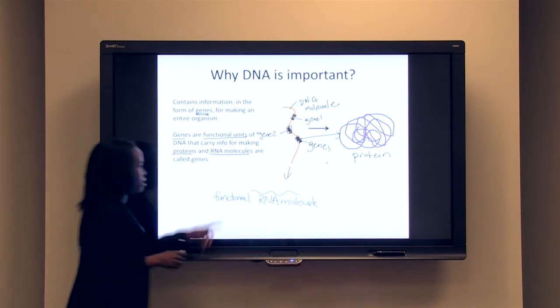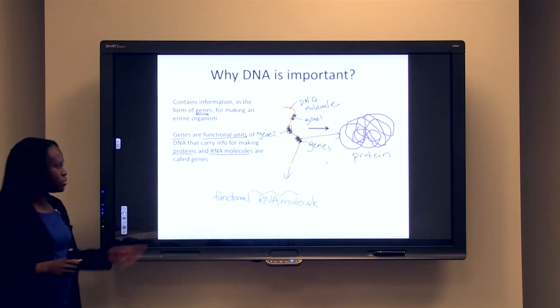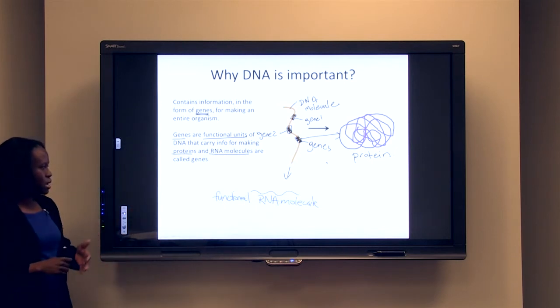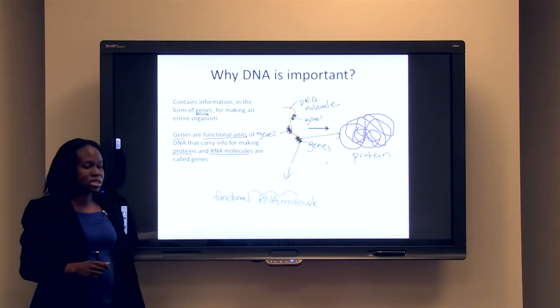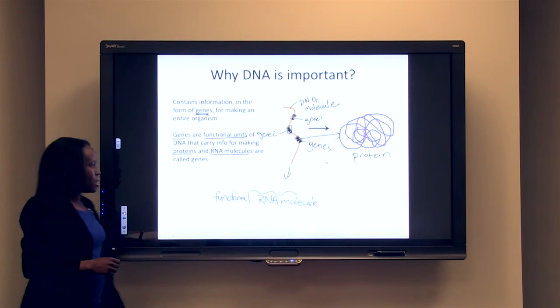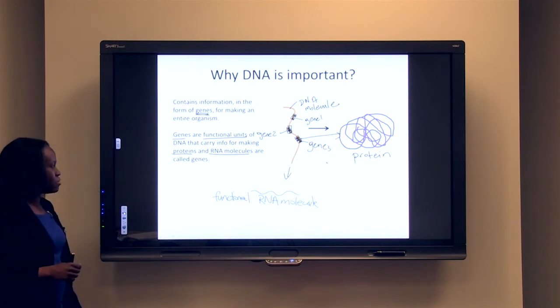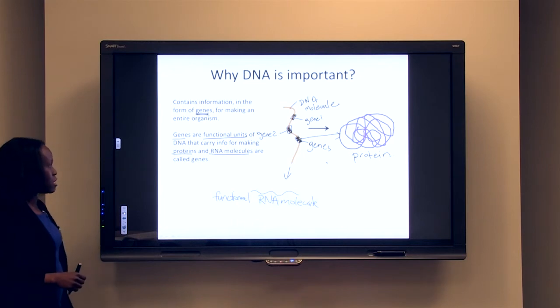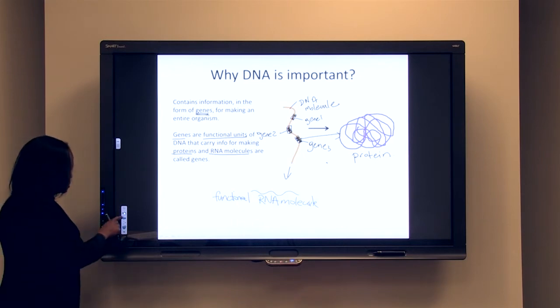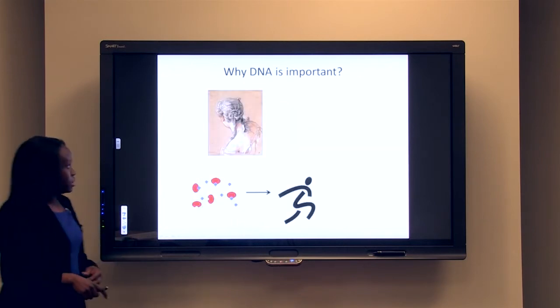This molecule can form what are called functional RNA molecules. These are molecules that work by themselves. They're not converted or used to make proteins. We're going to talk about this later when we talk about gene expression. tRNA and transfer RNA and ribosomal RNA are actually called functional RNA molecules.